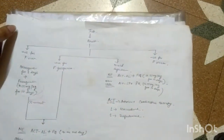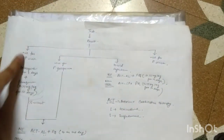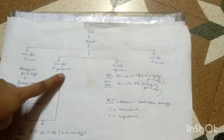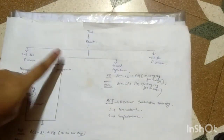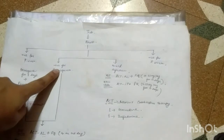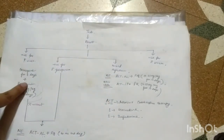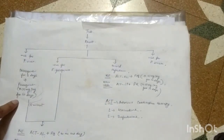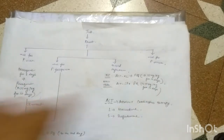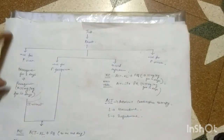Mixed infection implies that this can be both falciparum and vivax. So falciparum's treatment is ACT that you are going to apply here, and vivax's treatment is primaquine for 14 days at 0.25 milligram per kg, which you also apply here.